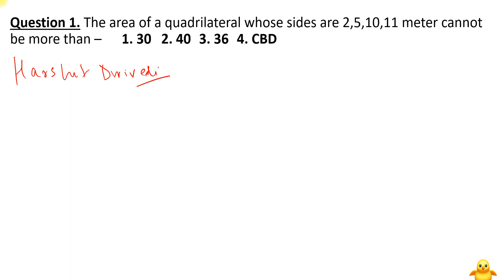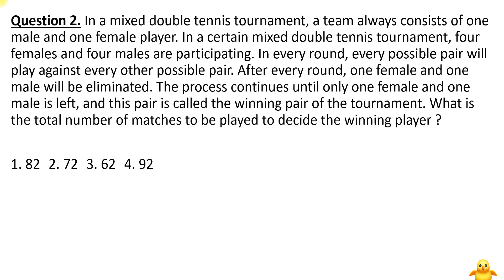The first question we are going to discuss: the area of a quadrilateral whose sides are 2 meters, 5 meters, 10 meters, and 11 meters — what can be the maximum area? The options are 30, 40, 36 square meters, or we cannot calculate the upper limit. We need to find the upper limit of the area of this quadrilateral.